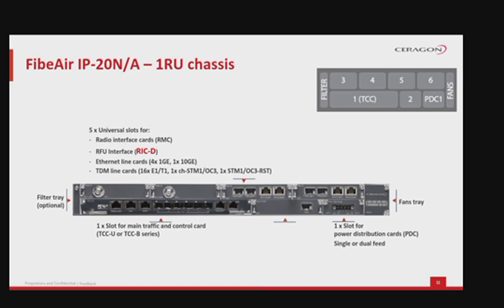TDM line cards include: LIC-T16 with 16 E1s or 16 T1s; LIC-155 with 1 channelized STM-1; and LIC-STM-1 or OC3 RST with 1 STM-1. The IP20N one rack unit chassis holds a single power distribution card, PDC, with one or two DC inputs. Additional components are the optional filter tray for dust protection at the left side, and the fans tray with four fans at the right side of the chassis.